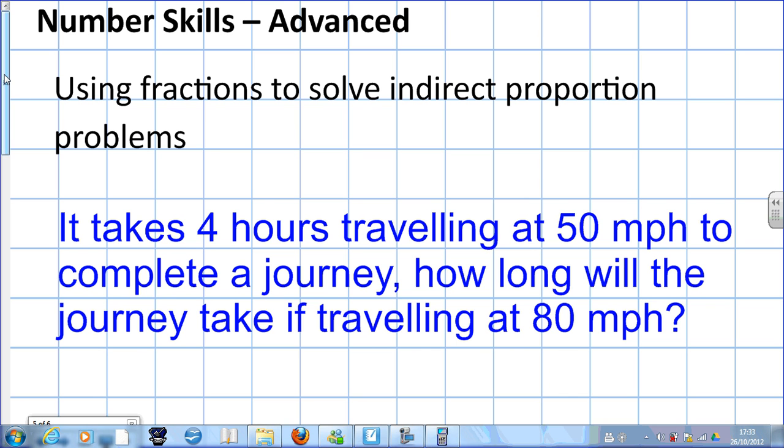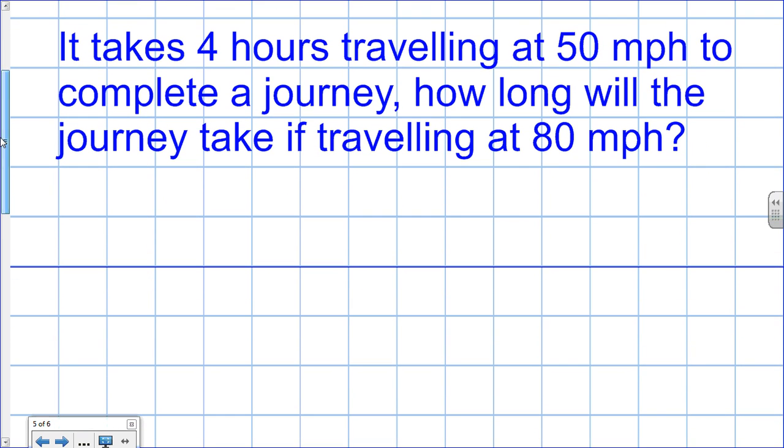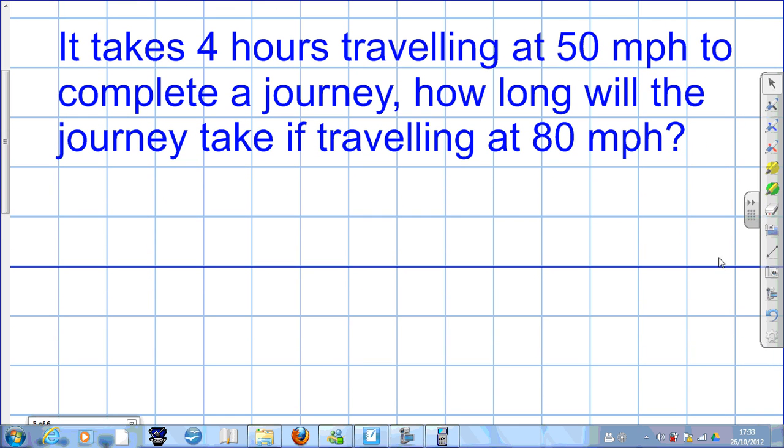Here's a concrete example. It takes four hours travelling at 50 miles per hour to complete a journey. How long will the journey take if travelling at 80 miles an hour? Now, this is indirect proportion because as the speed goes up, the journey time goes down. So we solve it like this.